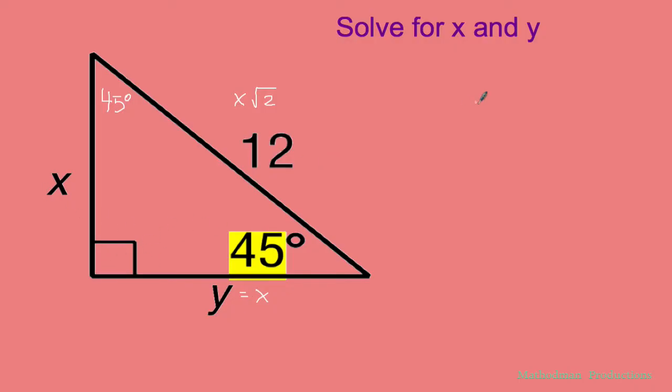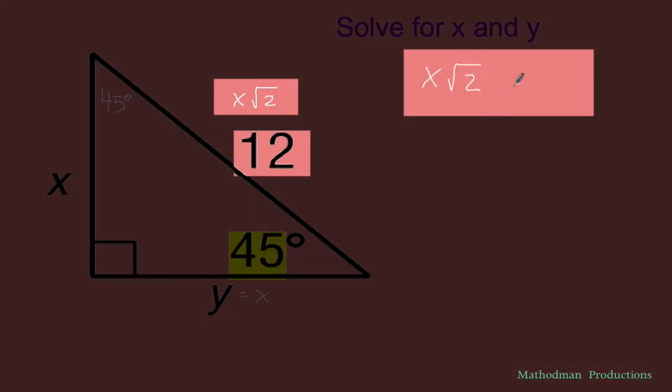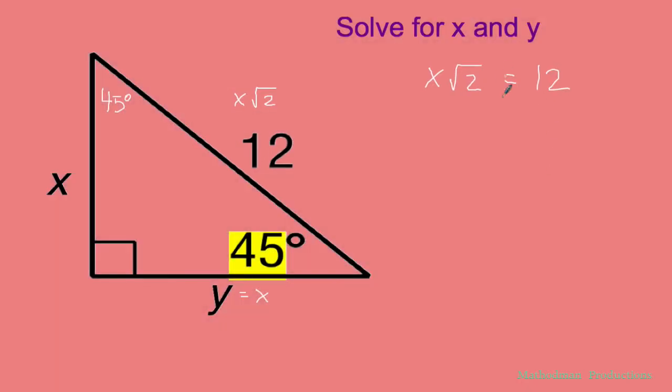So to do that, we can just set up this equation: X√2 equals 12. They have the same label right there. Solve for X, just divide by √2 on both sides. These cancel off. You get X equals 12/√2. That's an improper form. So to get rid of that radical at the bottom, just multiply the numerator and denominator by the square root of 2. That's going to knock off that square root.